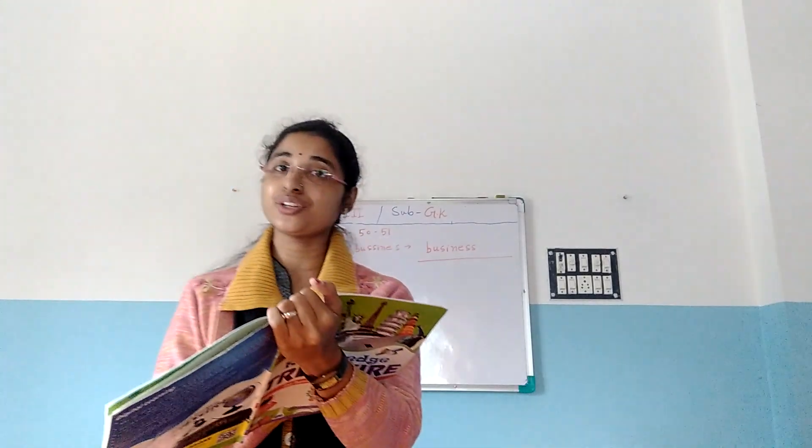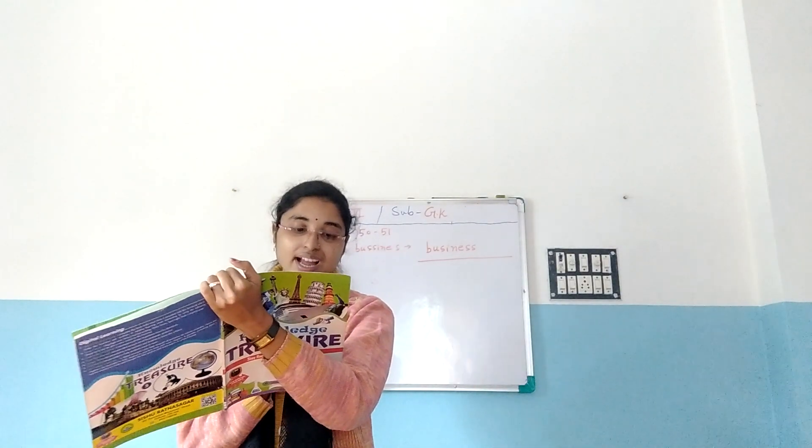Number 2: Difficult. The wrong spelling is D-I-F-I-C-U-L-T. That is wrong. The correct spelling is D-I-F-F-I-C-U-L-T. Difficult.